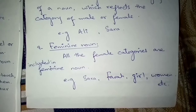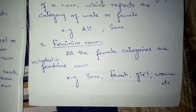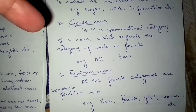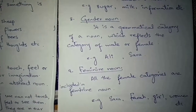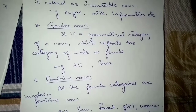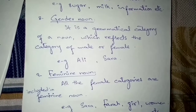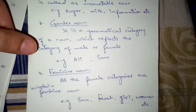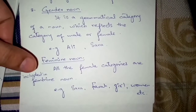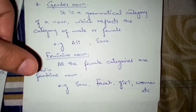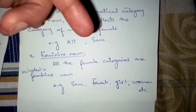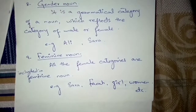The ninth type is feminine noun. Feminine noun includes all the female categories. Gender noun includes both male and female, but feminine noun includes only female categories. For example, Sara, Farah, girl, women — these are all feminine nouns.